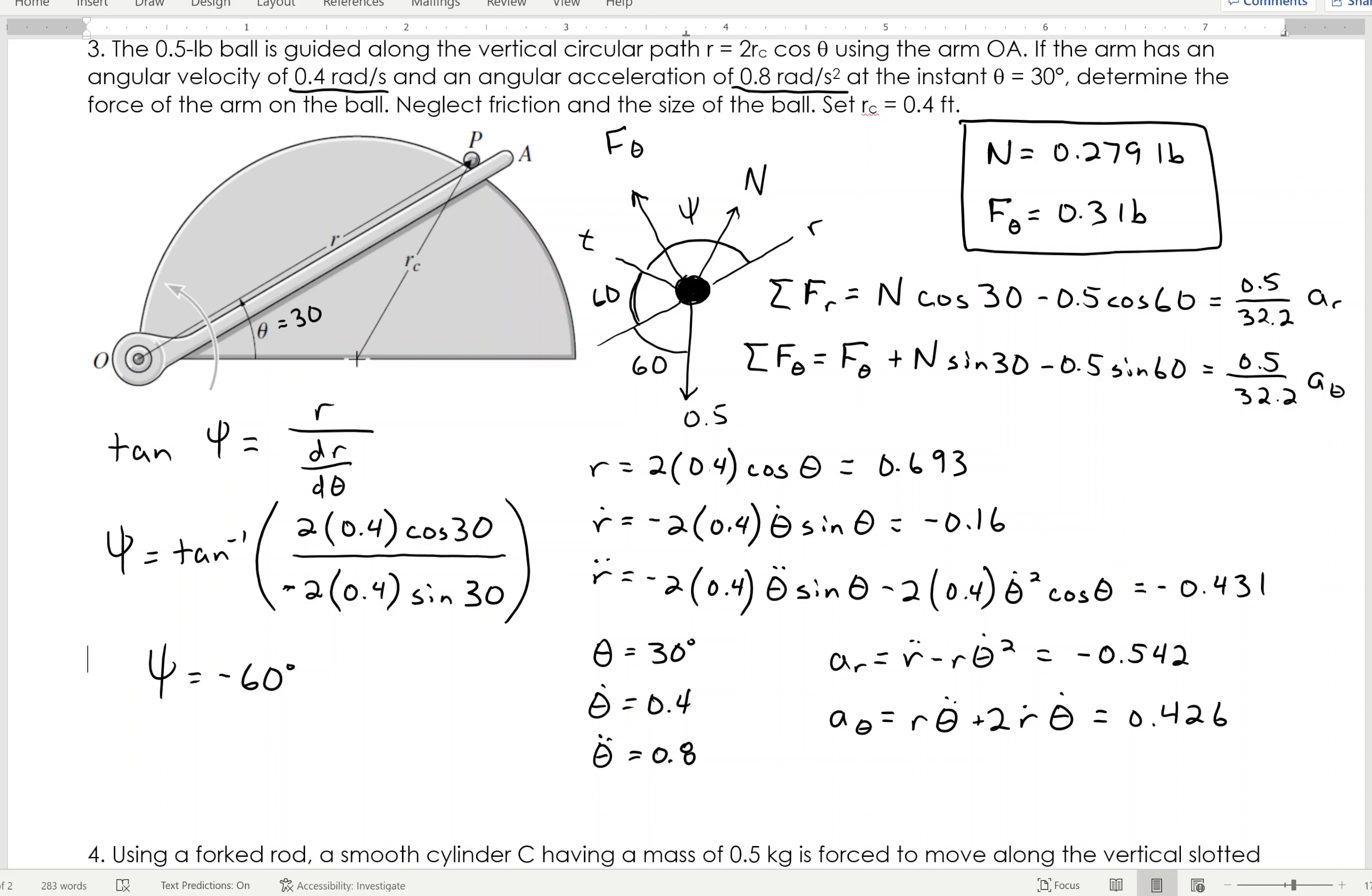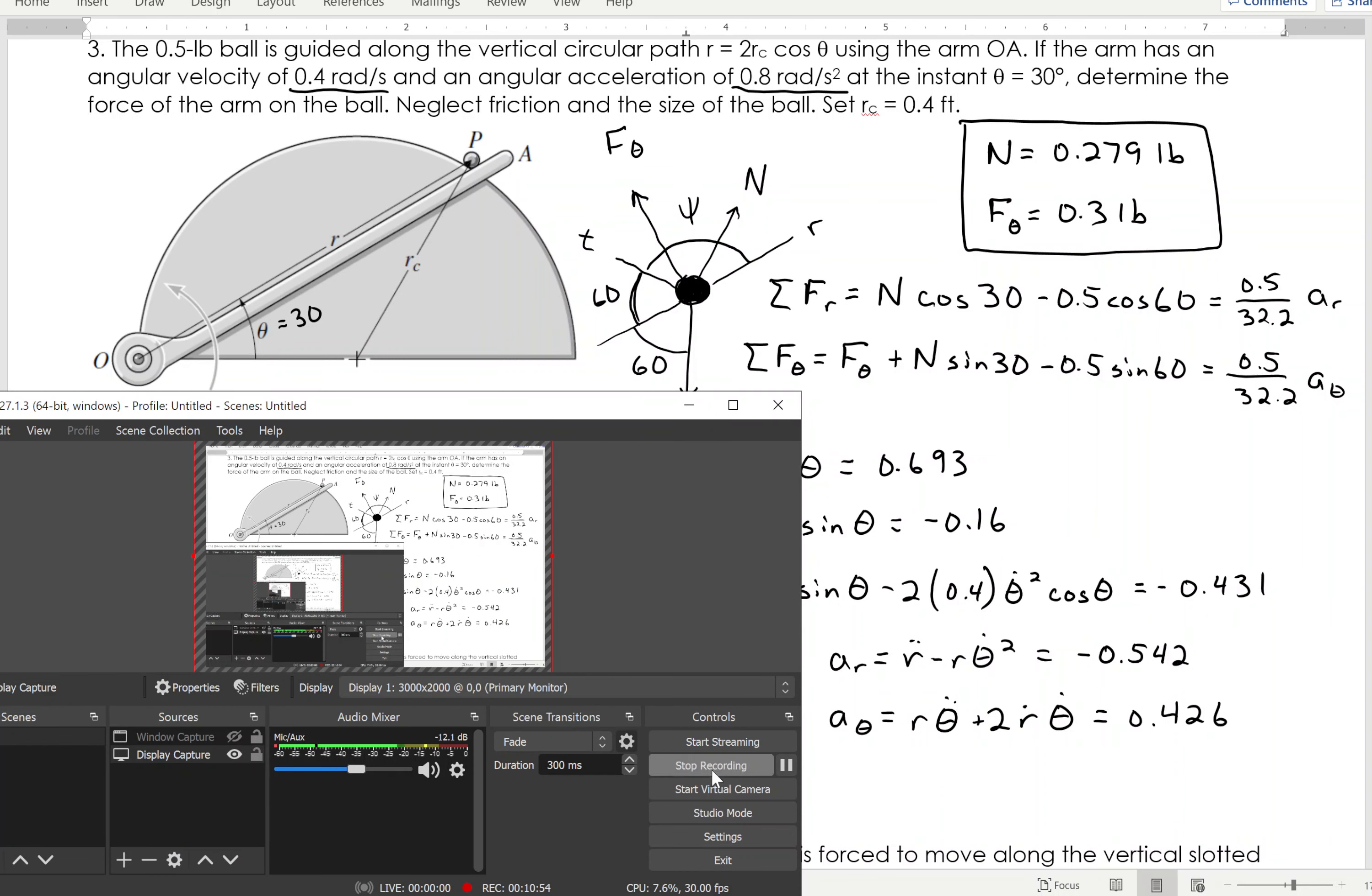Then I have to go through, find your R dot, R double dot, all that stuff to figure out my accelerations in the R and theta direction, from that I can then solve for the values, so a lot going on here, hopefully you're able to follow that without too much hassle.